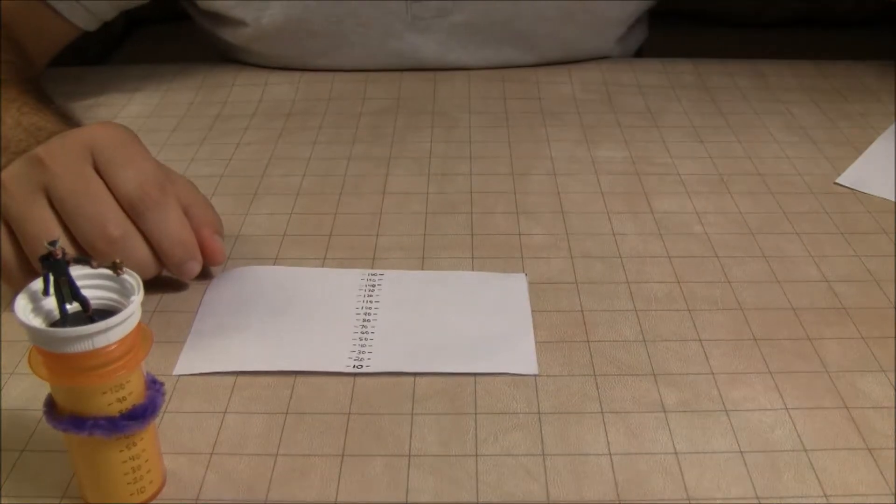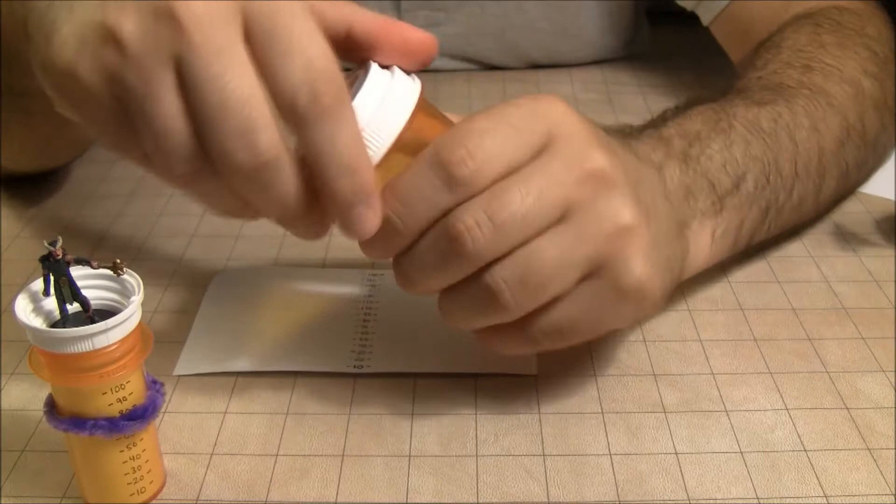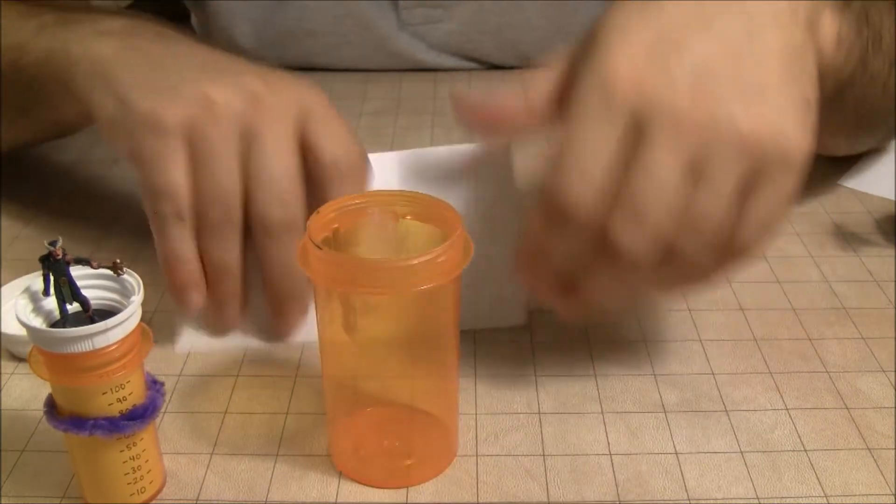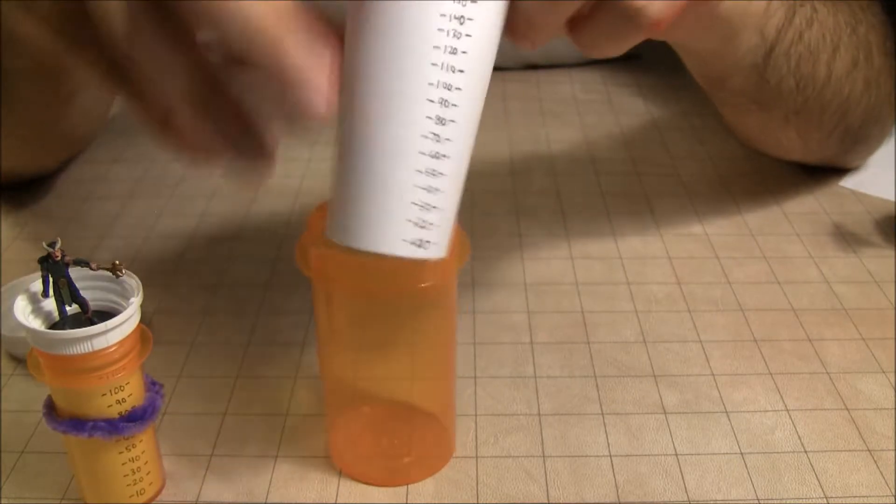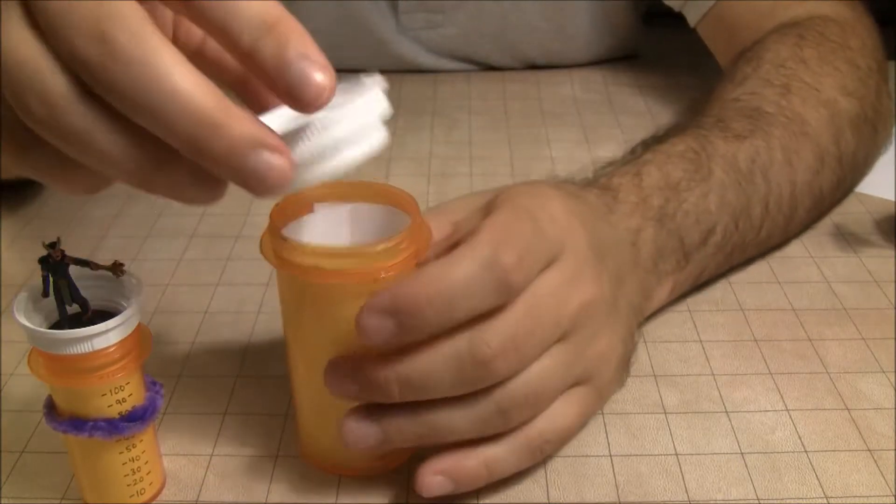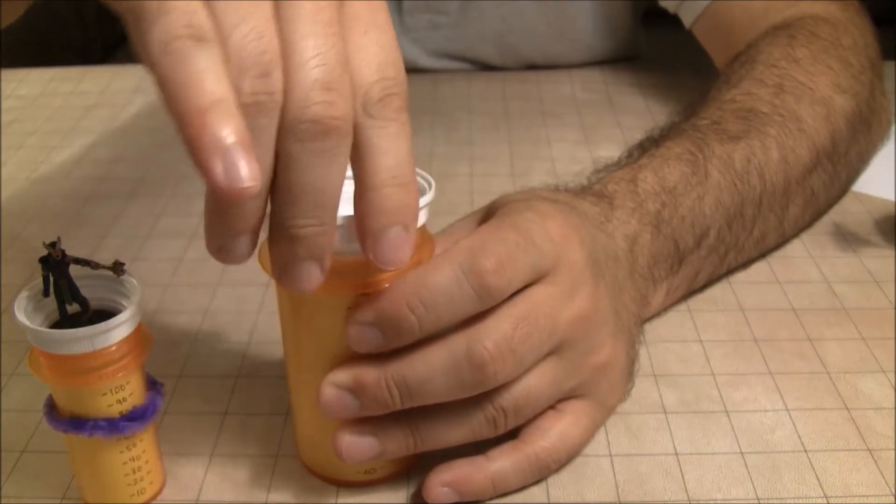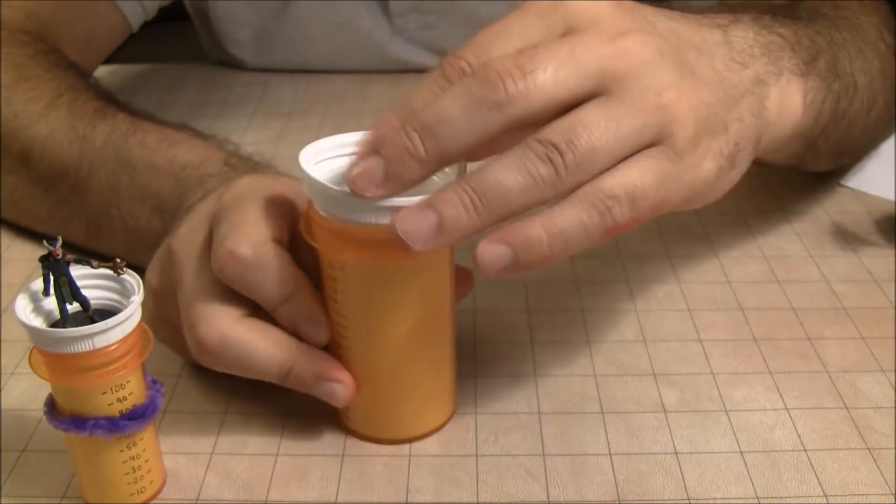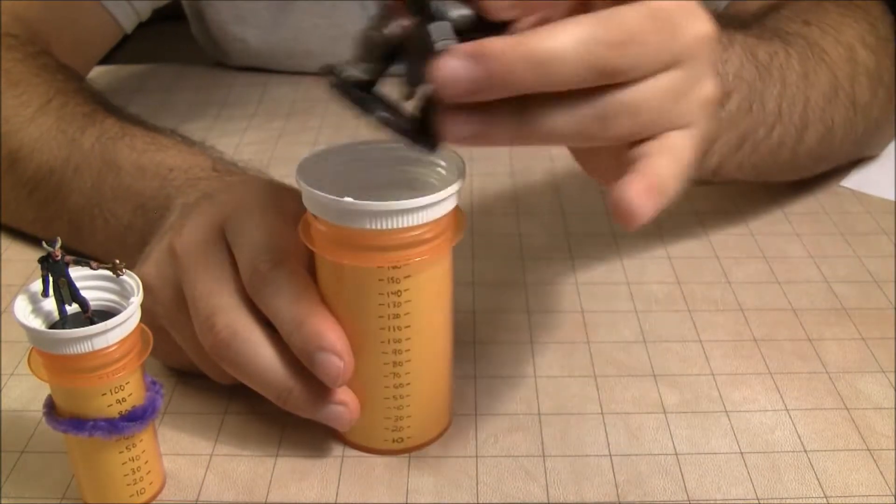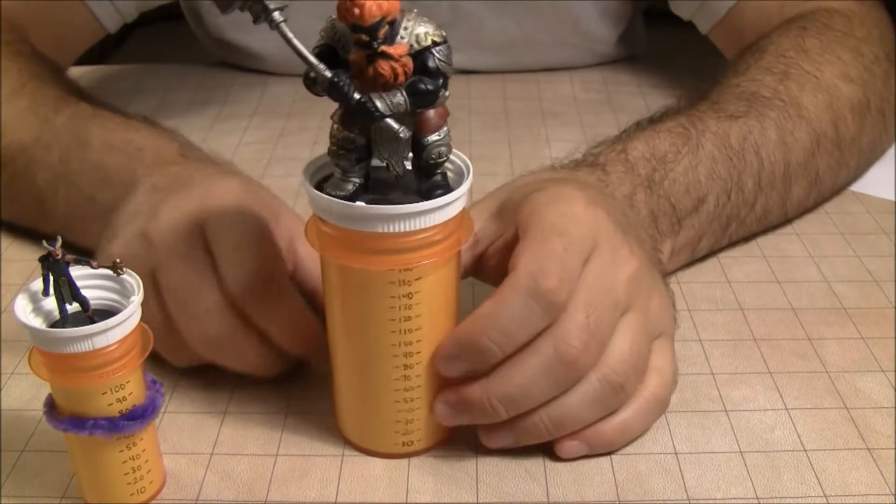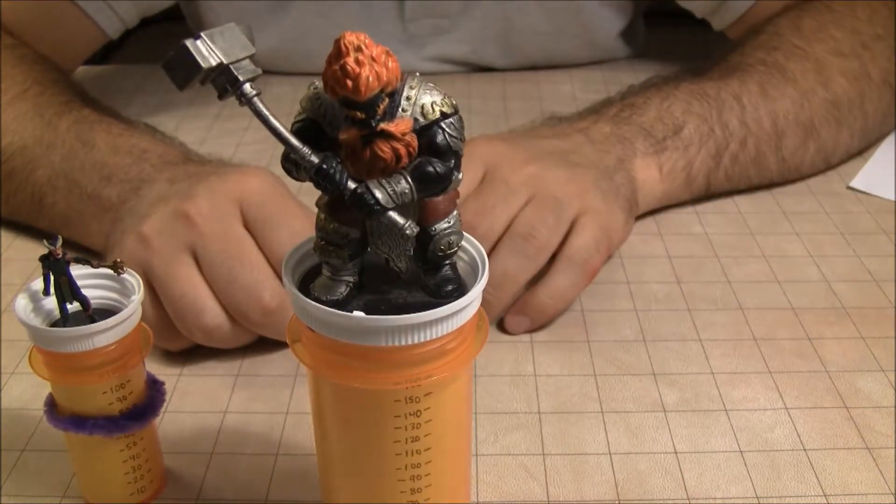We can do the same for our 40 dram. Here's our scale. It goes on the inside. The snap top goes on top, upside down. And our 2 inch base fits perfectly inside. Who casts fly on the fire giant again?